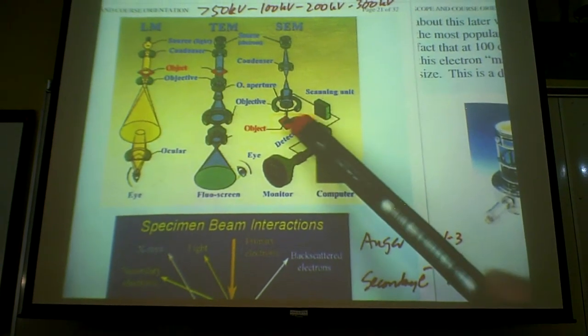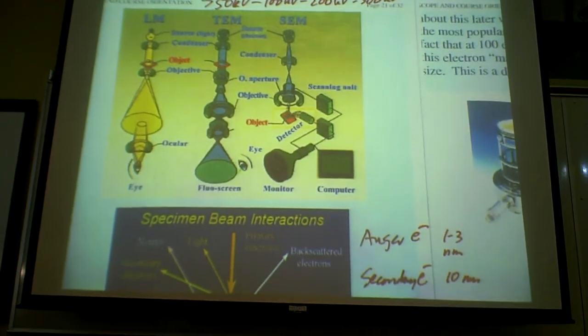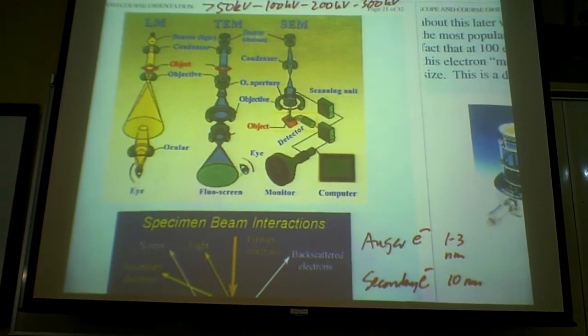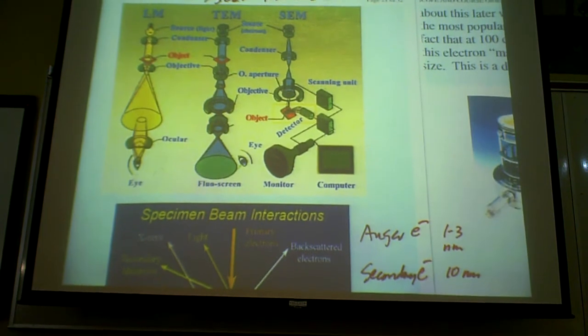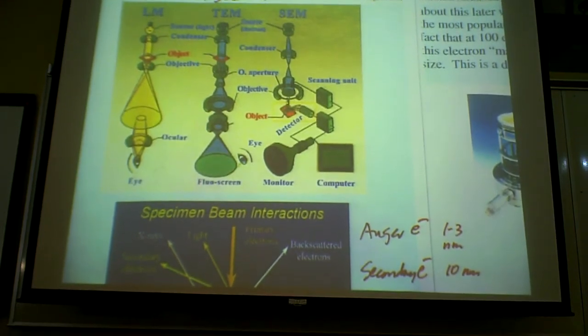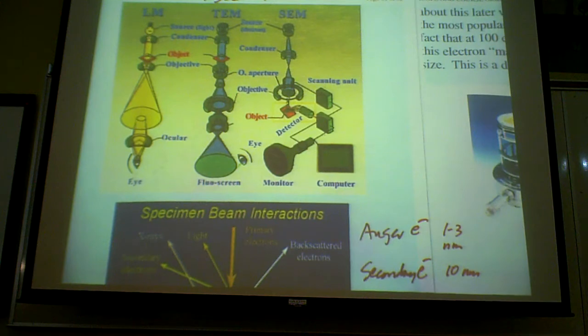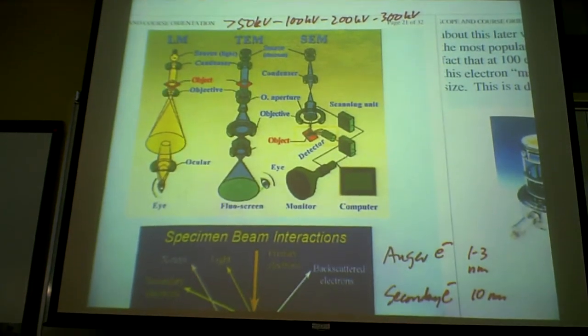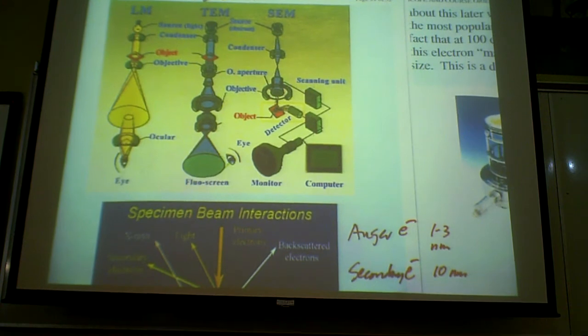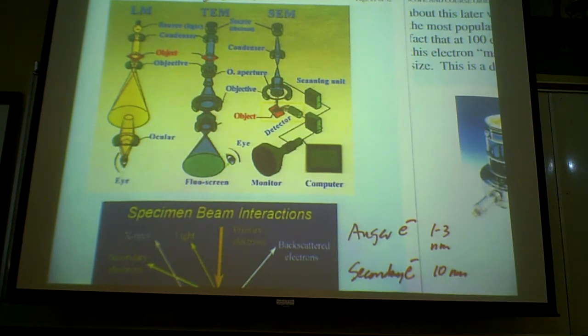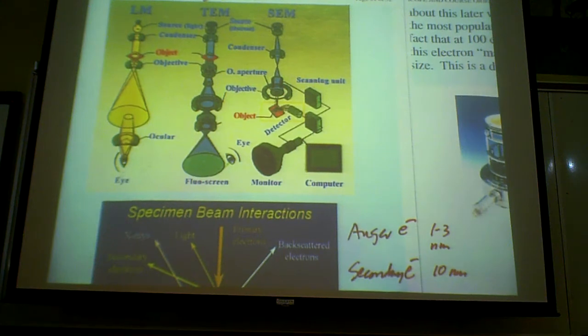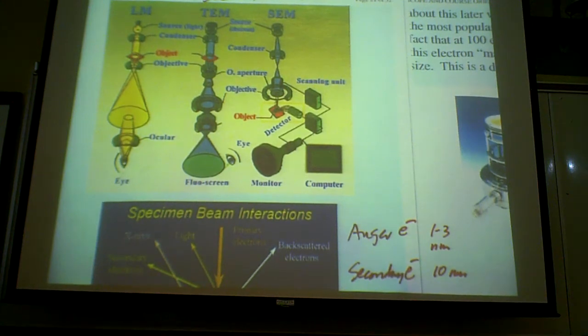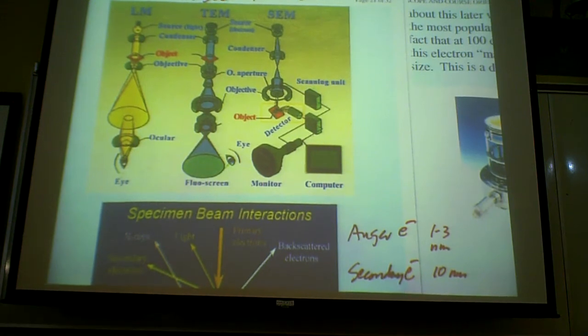So you have detector on the side, and you detect this secondary electron. It's not chemically specific, because all material emit. You remember this diagram, this plot that I talked about, about this charge distribution when I sent in a high-energy electron beam. At the low kinetic energy side, you see this huge electron broad peak, and that is the secondary electron.